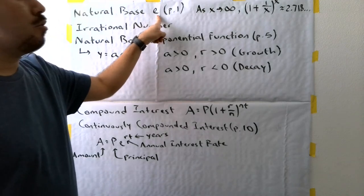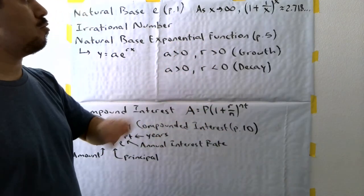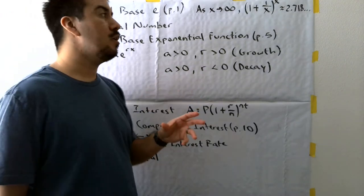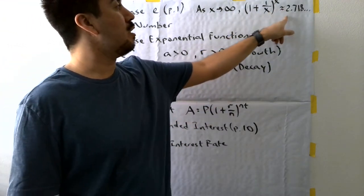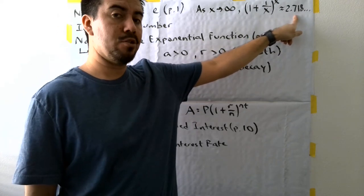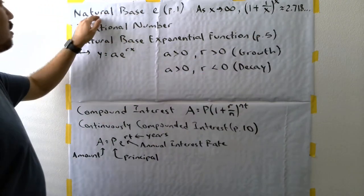You actually have a table on page 1 that shows you, you can actually test it out. You can plug in bigger and bigger values of x and you will see as you plug it in, it will get closer and closer to this irrational number. And so that's the natural base E.